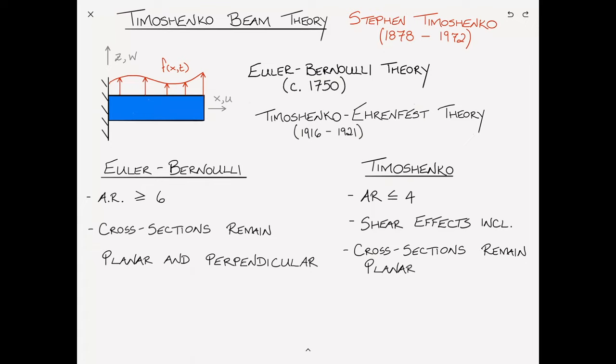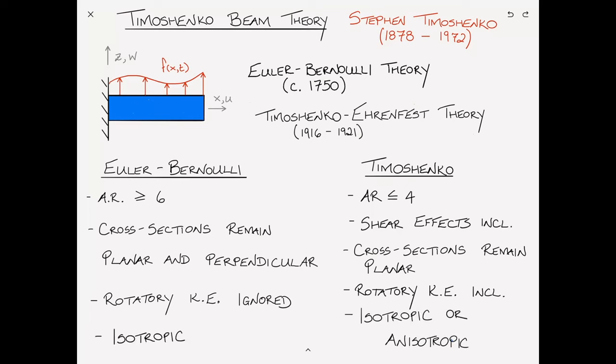And then in the case of the Euler-Bernoulli beam, we ignored rotary kinetic energy effects, which we were told were insignificant in the case of slender beams, whereas in the case of the Timoshenko beam, the rotatory kinetic energy is included. And then finally, the Euler-Bernoulli theory may be used only on isotropic beams, whereas the Timoshenko beam theory can be used on isotropic or anisotropic beams. This means when dealing with composite-type materials, one must use a Timoshenko beam theory.